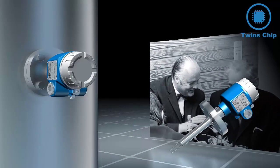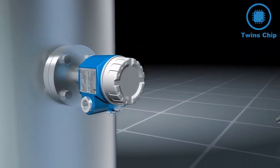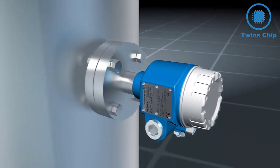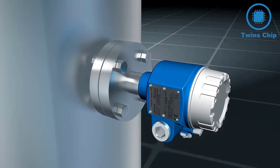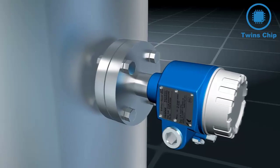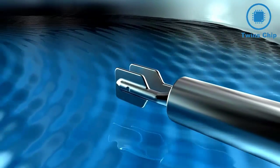This principle uses the direct correlation between oscillation and damping in media. Let's have a closer look at how this measuring method works. Vibronic instruments monitor point levels in tanks, containers and pipes. A sensor in form of a tuning fork is excited to its resonance frequency.